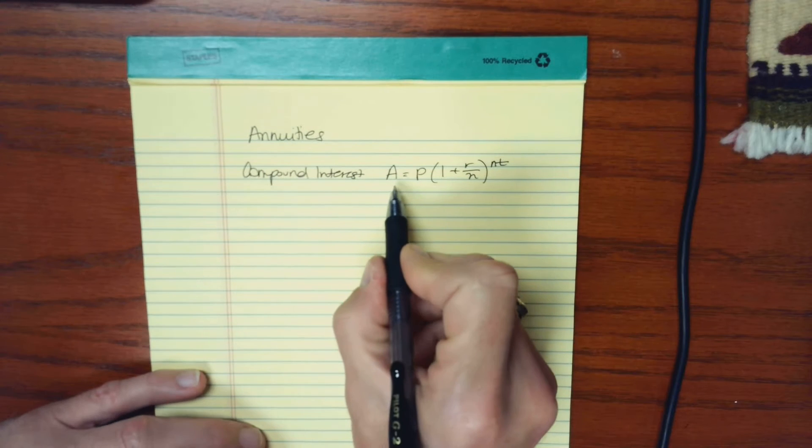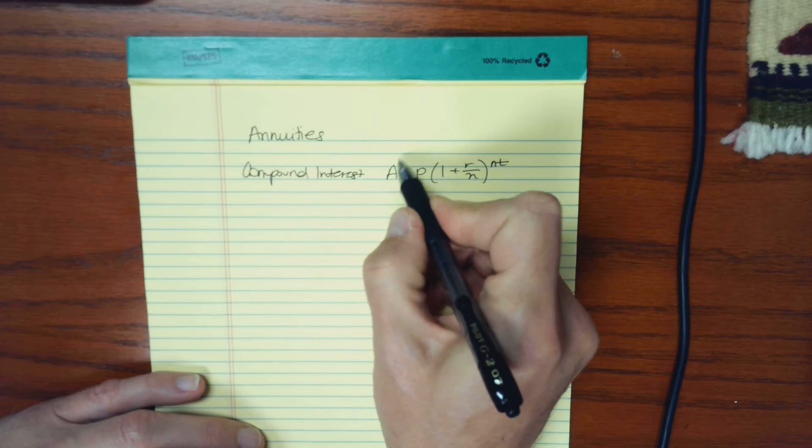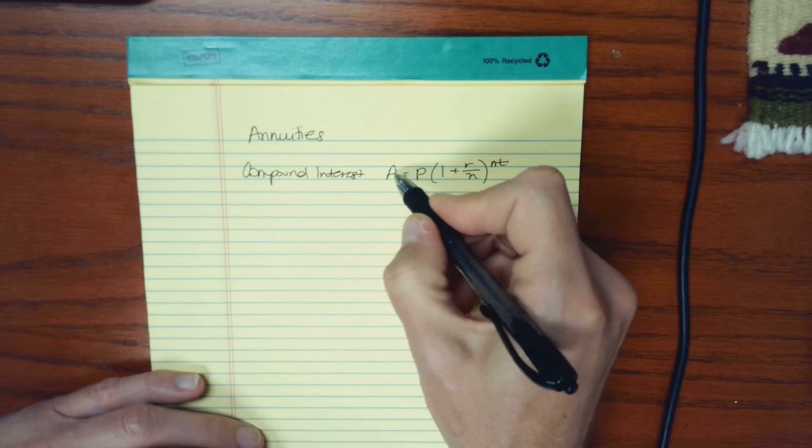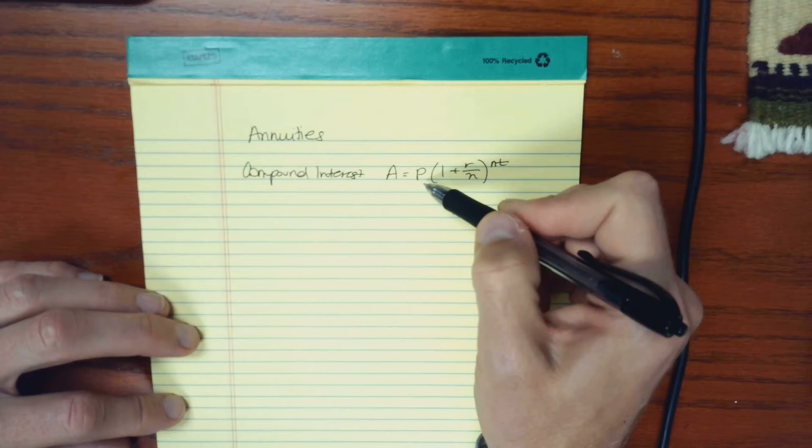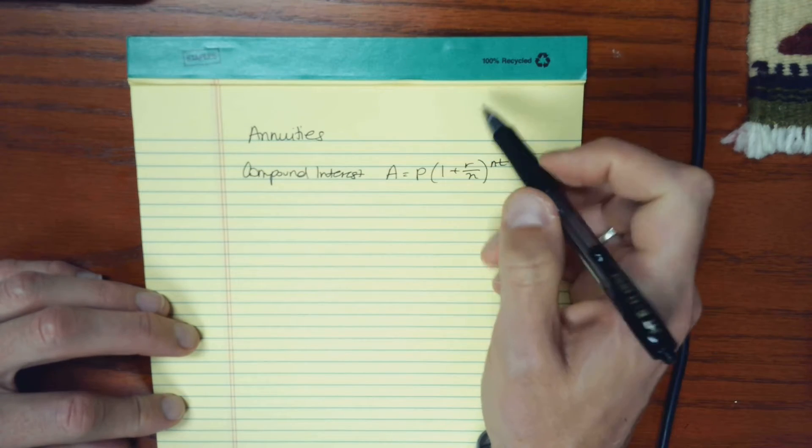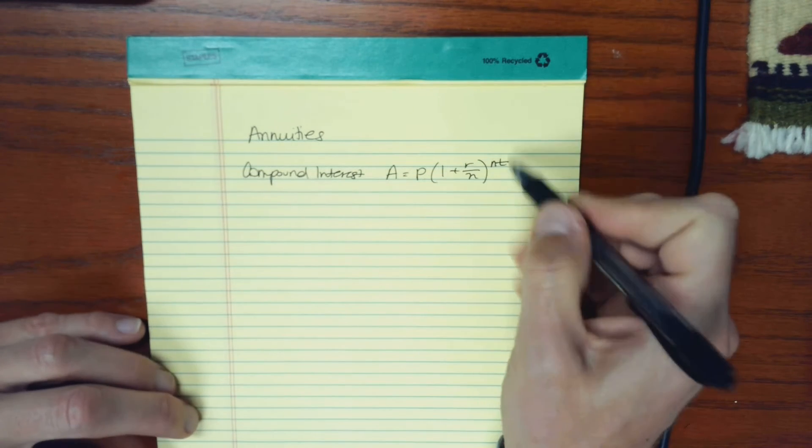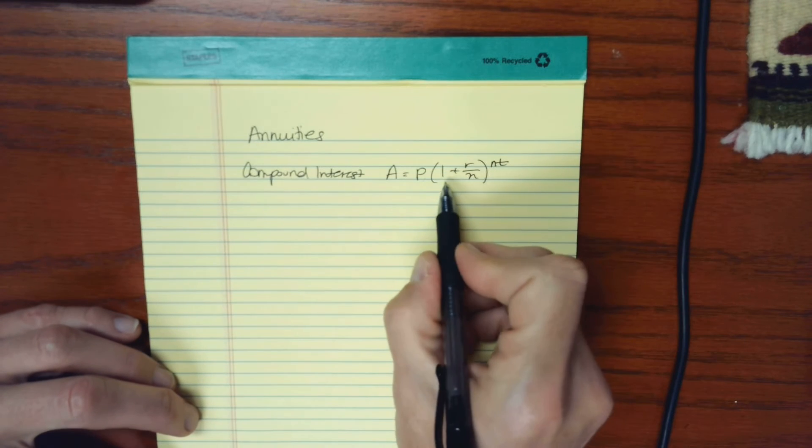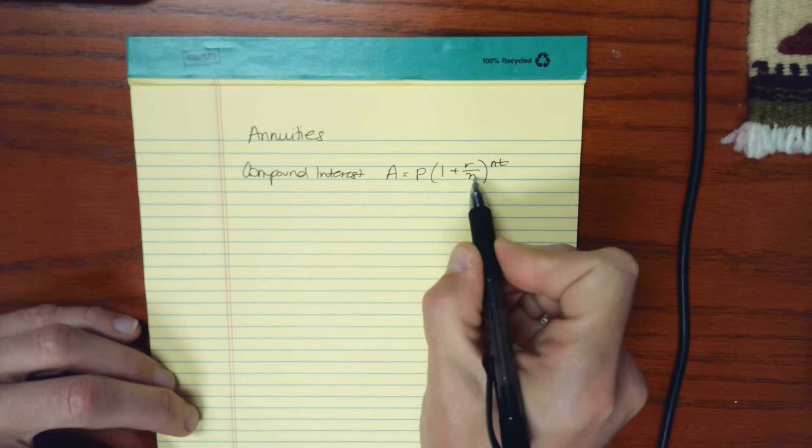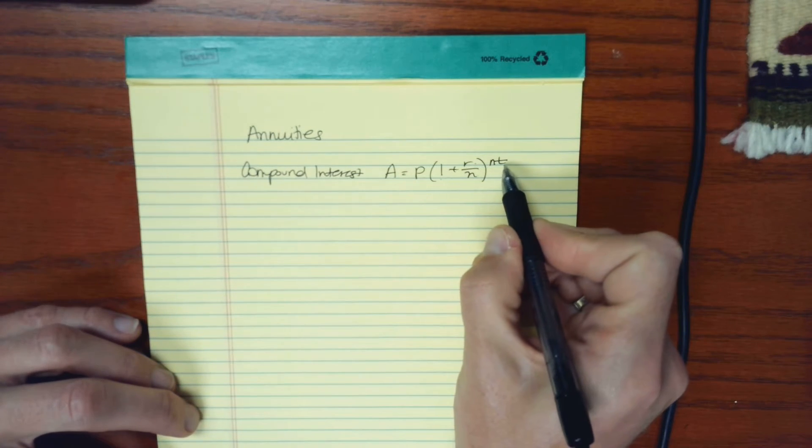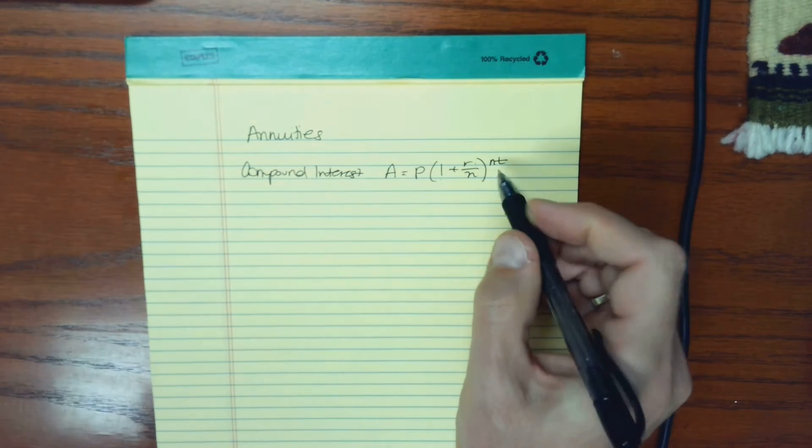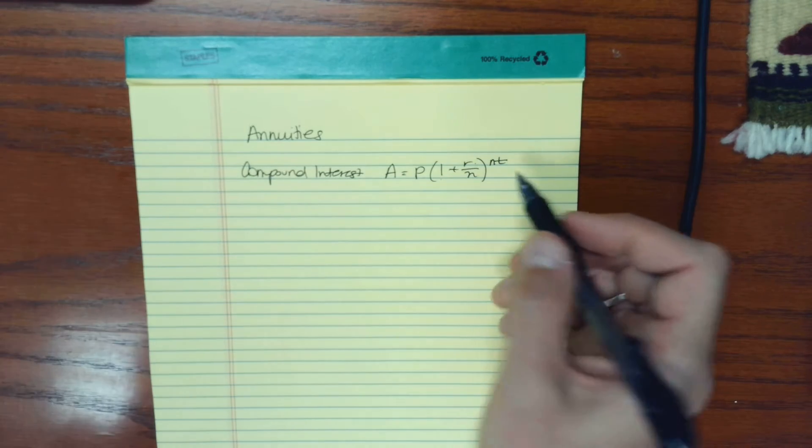And the formula that we use for compound interest said your future value, which is A, the amount of money you would have after some time has passed, can be found by taking your principal or present value, the amount of money you invest, and multiplying it by a factor where we take 1 plus R over N, where R is an interest rate, N is the number of times a year that you're compounding, and then T is the number of years that you are able to leave your investment and let it grow.